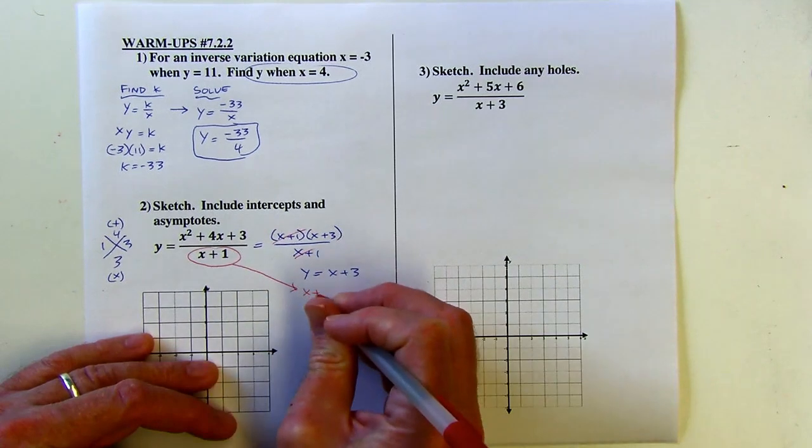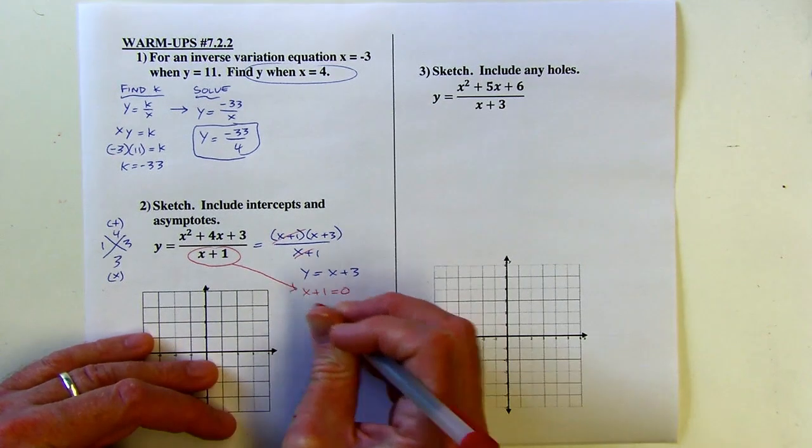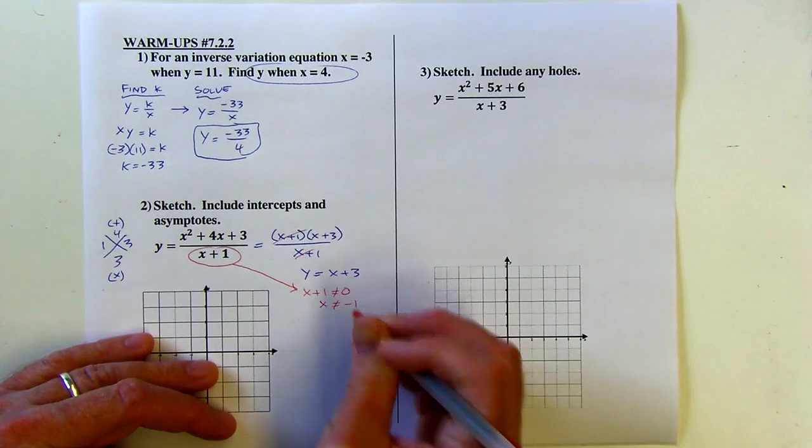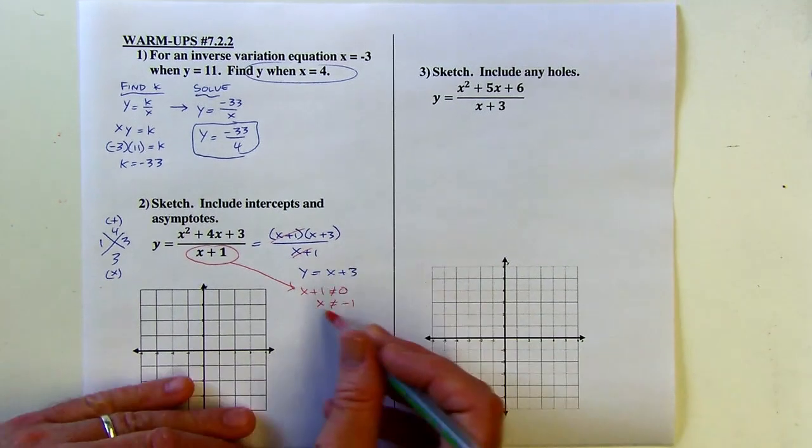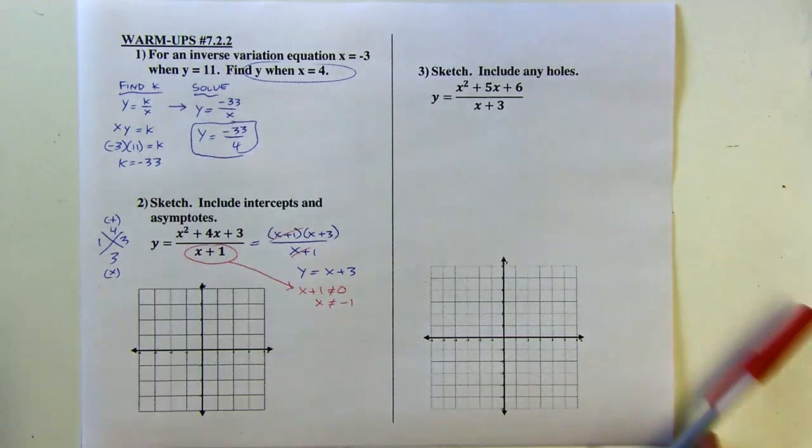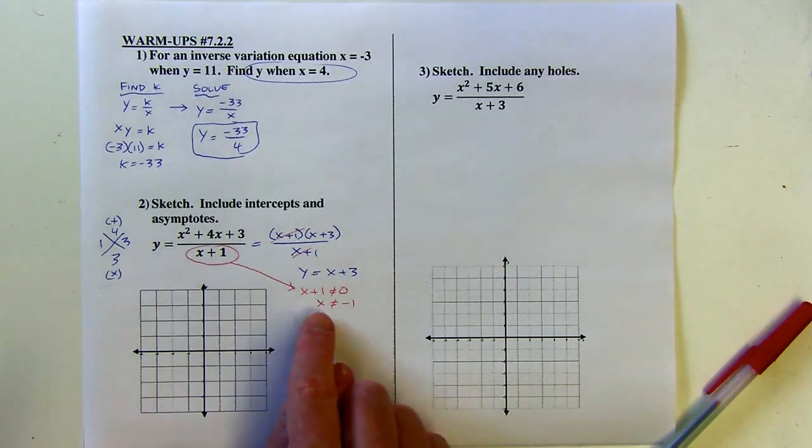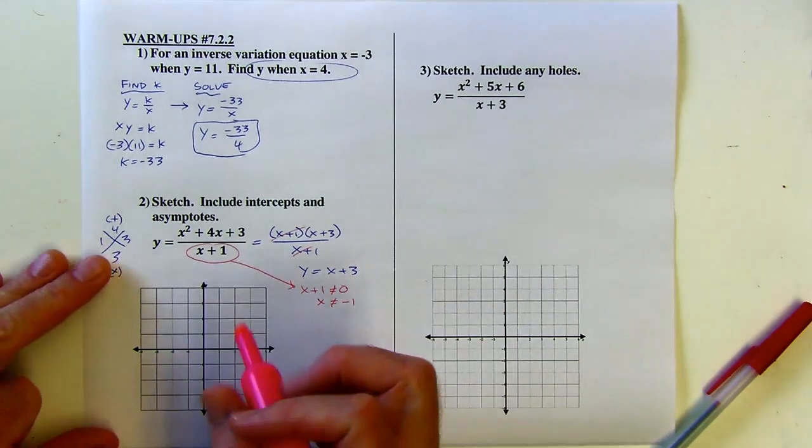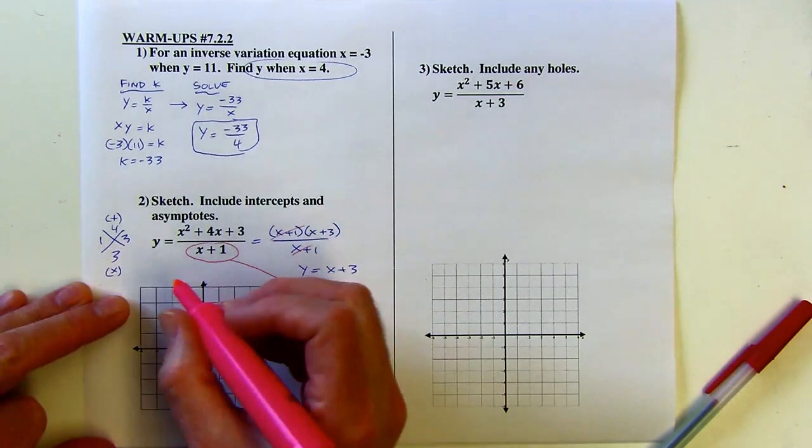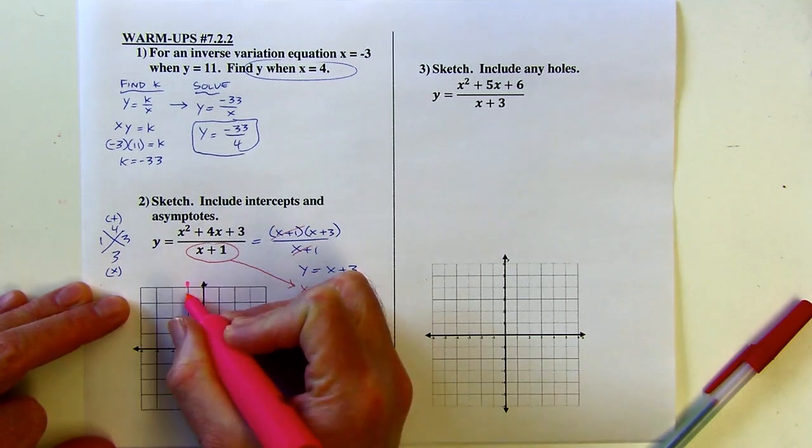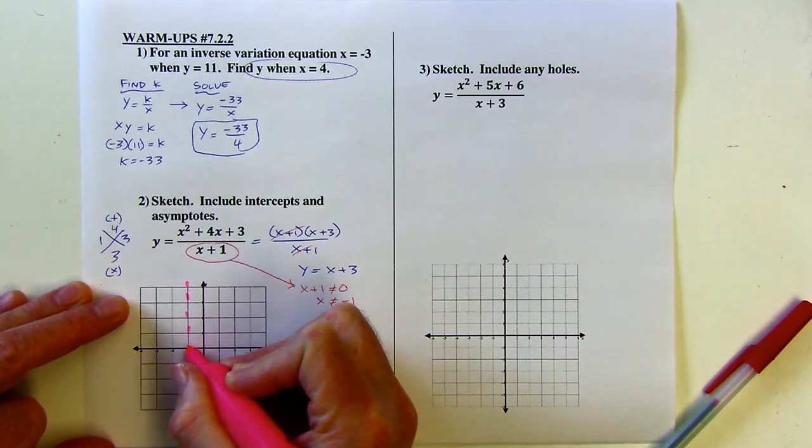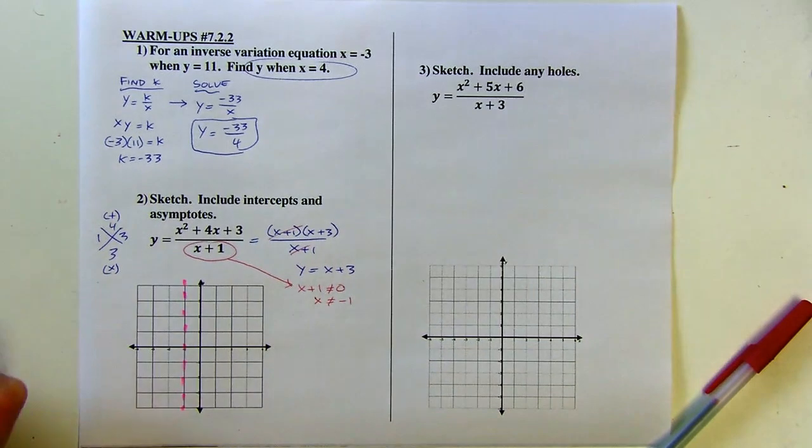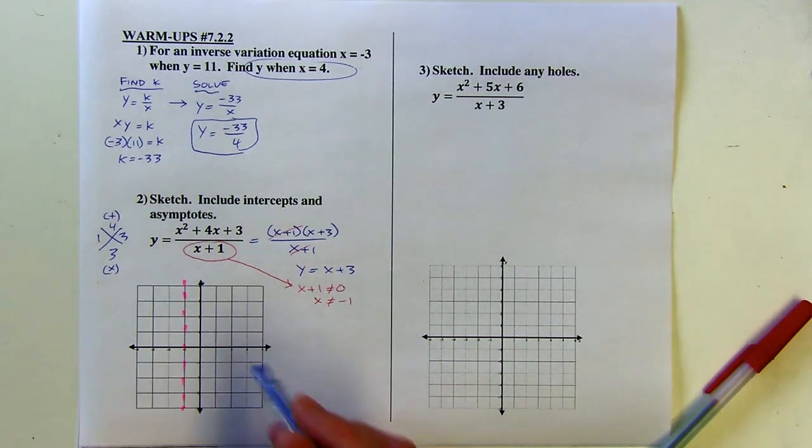In the original problem, x plus 1 can't equal 0. So that means that x can't equal negative 1. Okay, so this is a straight line as long as x does not equal negative 1. So what I'm going to do is put a vertical asymptote here at x equals negative 1. It's not really technically going to be a vertical asymptote because asymptotes kind of guide curves. But these x values are off limits. That's all of the x values where x is negative 1, or all the points where x is negative 1.